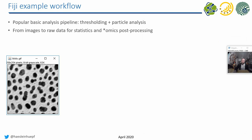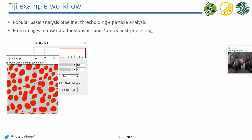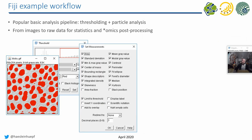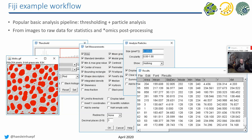A typical Fiji workflow looks like this: start from an image, apply a threshold to differentiate objects from background (objects marked in red), set measurements to tell the software what you want to measure — for example area, center of mass, standard deviation, mean gray value — then run the particle analyzer, which takes those measurements and the segmentation and outputs a results table. This is maybe the most common image analysis workflow in ImageJ.